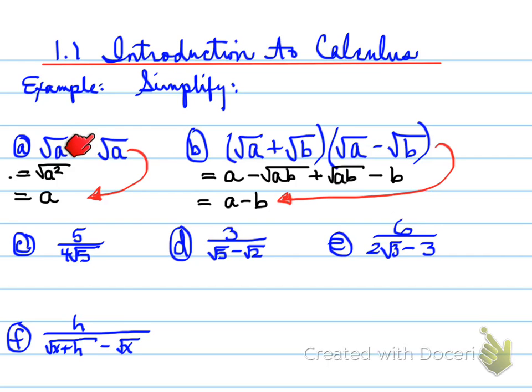And so if you have a question like root A times root A, you don't have to give me root A squared, you can automatically give me just A.